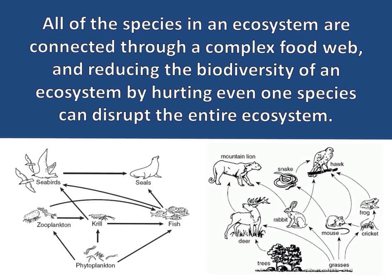All of the species in an ecosystem are connected through a complex food web, and reducing the biodiversity of an ecosystem by hurting even one species can disrupt the entire ecosystem. The consequences of reducing an ecosystem's biodiversity are very difficult to predict, but the consequences can be permanent.